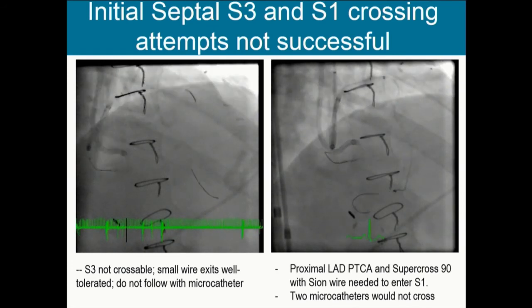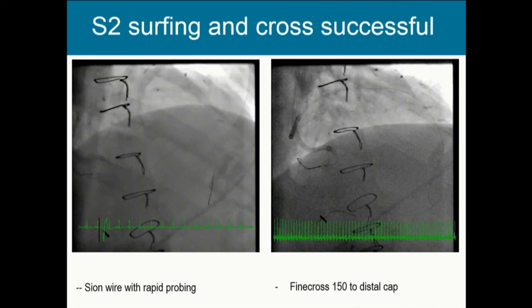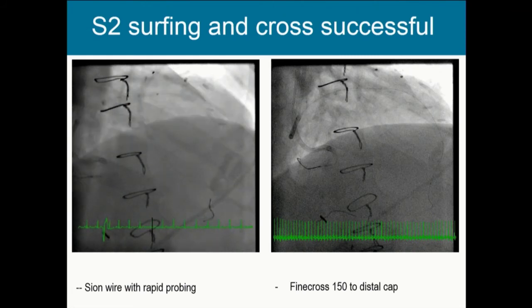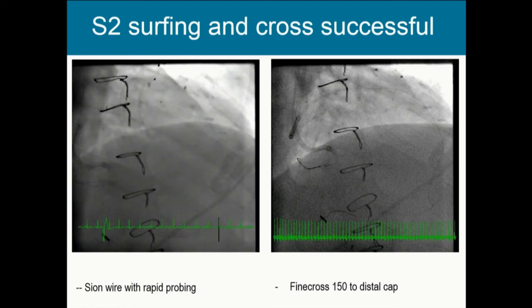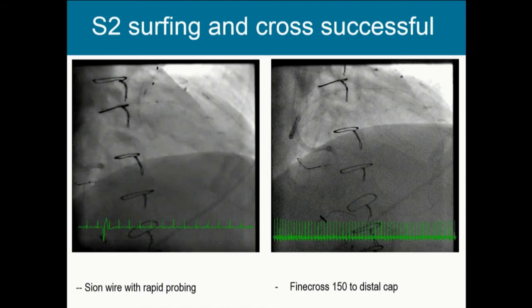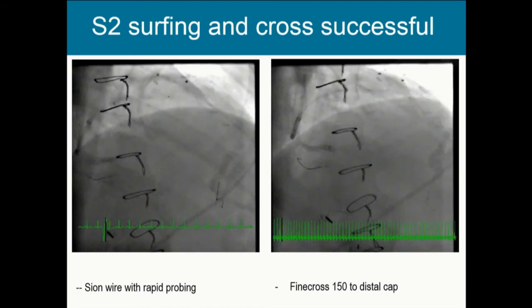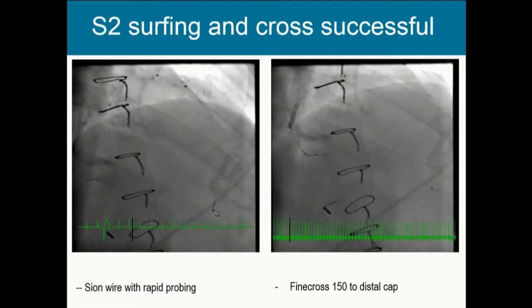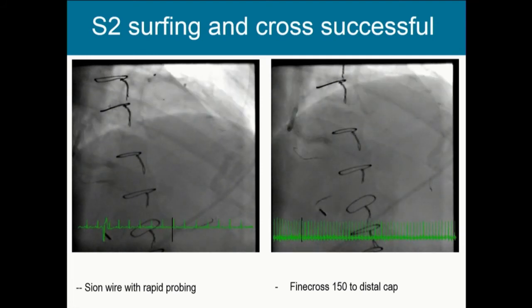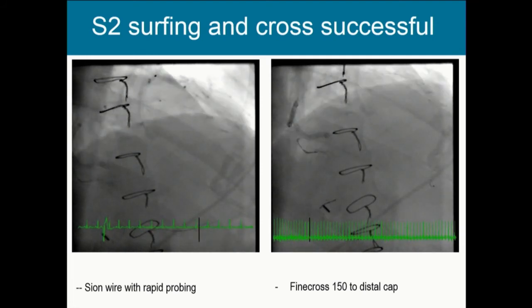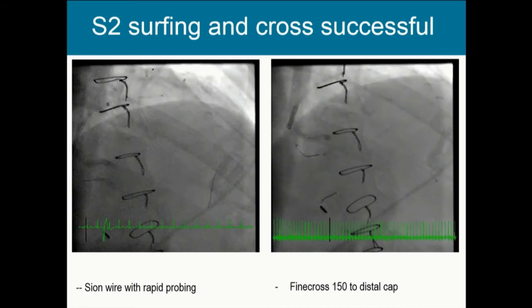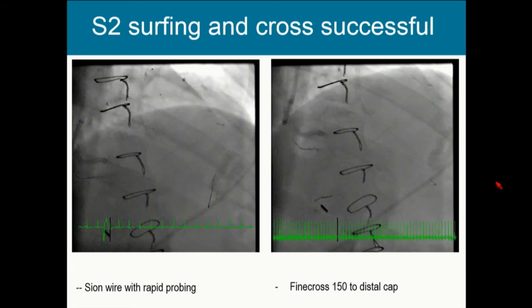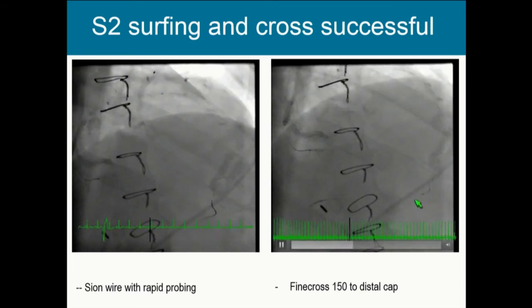We went back to our second septal. Using the techniques described — just gentle, steady manipulation of the Sion wire — this one, which was unexpected, actually crossed quite smoothly. This was confirmed in the LAO cranial view. It just reinforces that you won't necessarily know what your best connection is ahead of time. A Finecross 150 catheter was now able to make it all the way down to the distal cap, and we were now at the next stage of attacking the distal cap and heading retrograde.